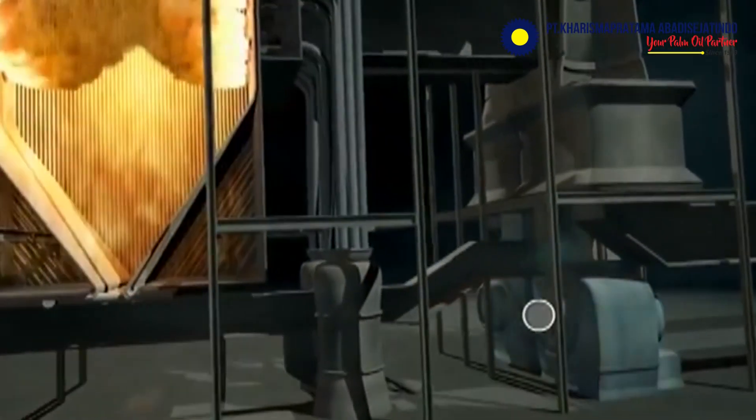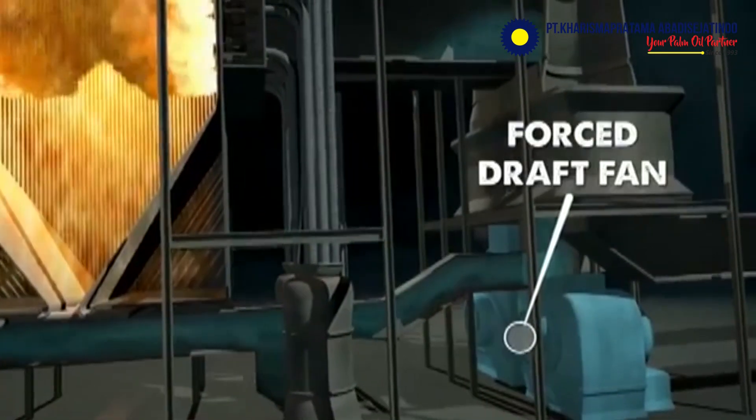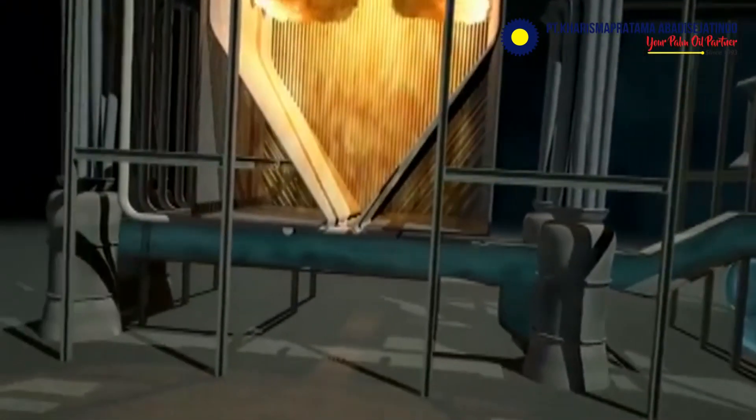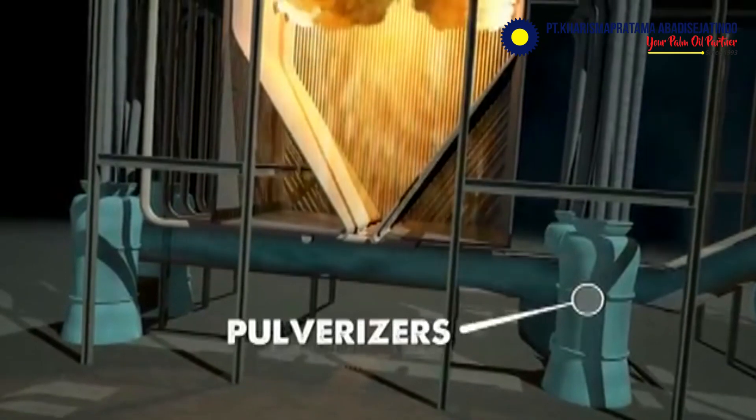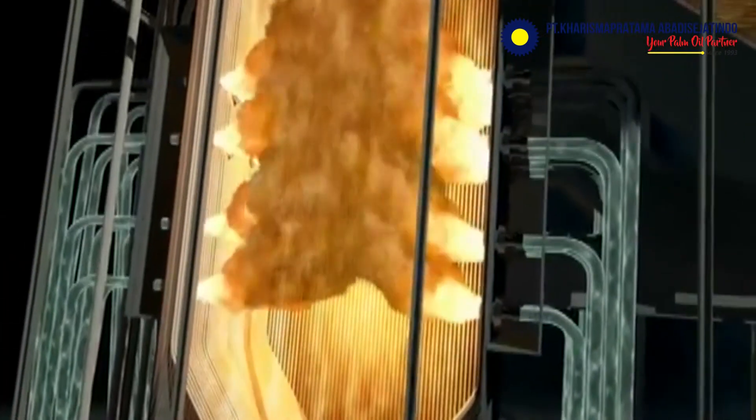The forced draft fan blows air into the system. A portion is routed to the pulverizers, which crush coal into a fine dust, before pushing the mixture up through feeder tubes.